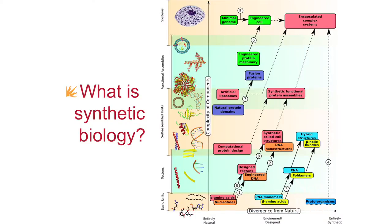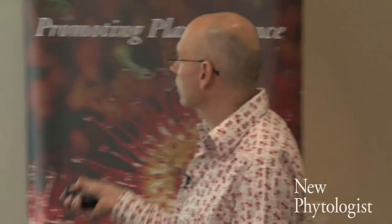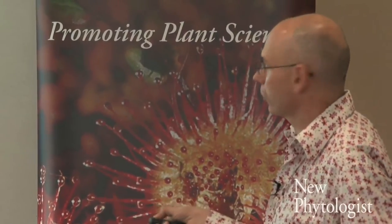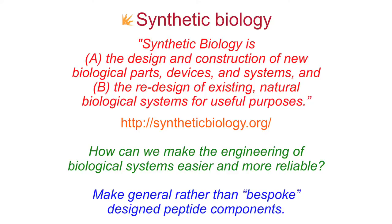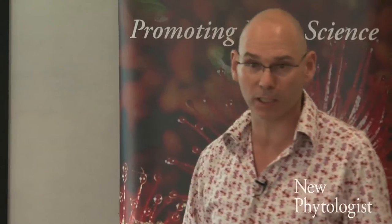This is a very complicated, busy slide — our first iteration of our synthetic biology space diagram. What is synthetic biology? I'm going to borrow a definition taken from the Synthetic Biology Org website. It simply states that synthetic biology is the design and construction of new biological devices and systems, and the redesign of existing natural biological systems for useful purposes. What we're trying to do in synthetic biology is make the engineering of biological systems easier, more predictable, and more reliable.